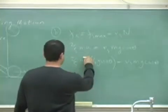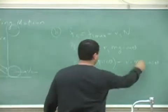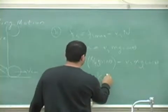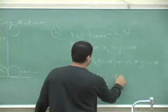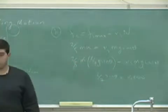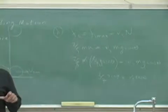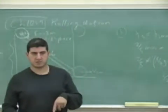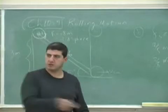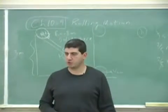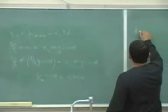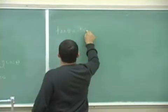Now cancel a bunch of things: M cancels M, G cancels G, five cancels five. You're left with two-sevenths sine theta equals mu s cosine theta. The question was: given mu s is 0.6, what's the greatest angle before it begins to slide? It doesn't roll anymore after that angle. So the answer is tangent theta equals seven mu s over two.